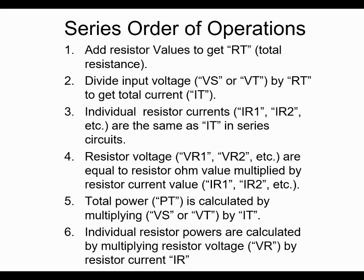Now you want to get the total power for the circuit, and that's by taking the voltage powering the circuit and multiplying it by the current — V times I gives you total power. Then you want to get the power across the individual resistors by multiplying the resistor voltage value by the current.